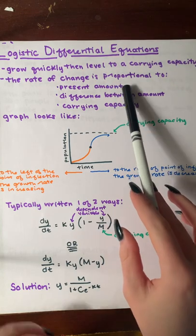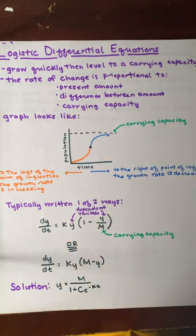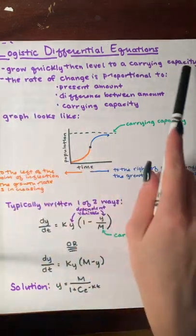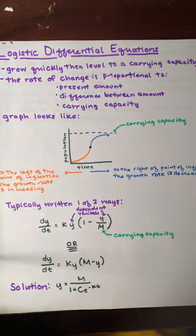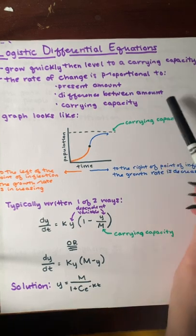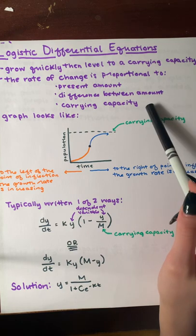So right here are just some key points about the topic. We know that logistic differential equations grow quickly and then they level off to carrying capacity. And the rate of change is proportional to the present amount, the difference between the amount, and the carrying capacity.